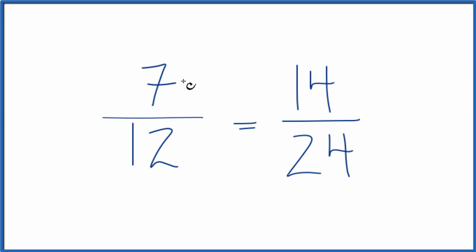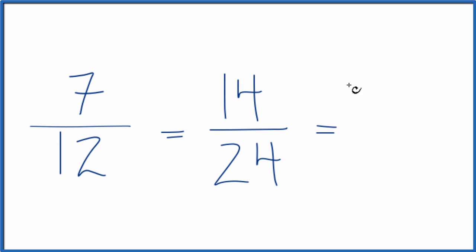Instead of multiplying the numerator and denominator by 2, we could multiply them by 3. 7 times 3 is 21, and 12 times 3 is 36. Another equivalent fraction to 7/12.